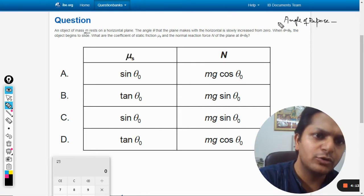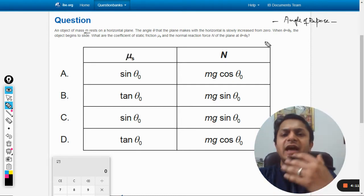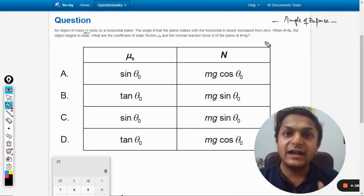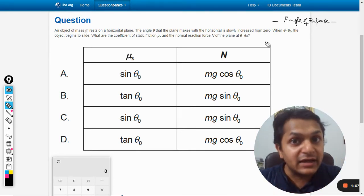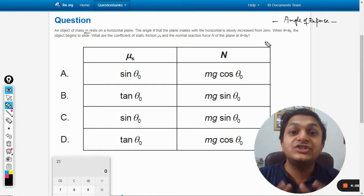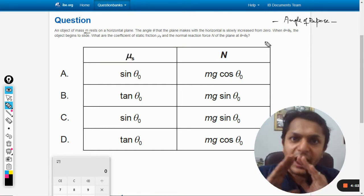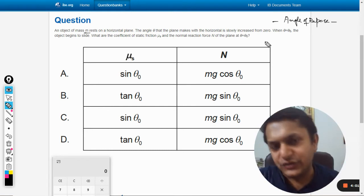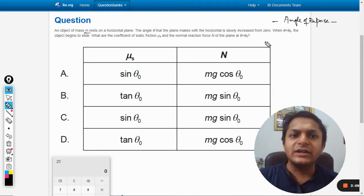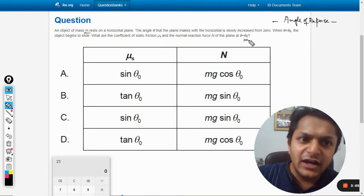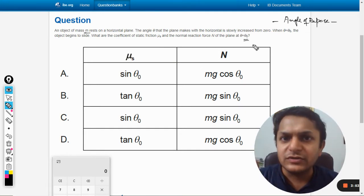As a matter of fact, the angle of repose is the angle that the inclined plane has to make so that the body just starts sliding, exactly as given in your question. Basically what they want is to find these conditions, and theta naught is the angle of repose.